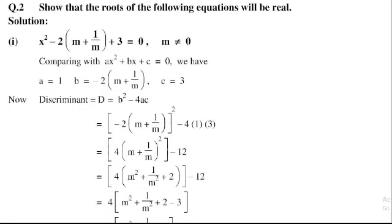Next, 4 into m squared plus 1 divided by m squared plus 2, minus 3. So next, 4 into m squared plus 1 divided m squared plus 2 minus 3 is equal to minus 1.